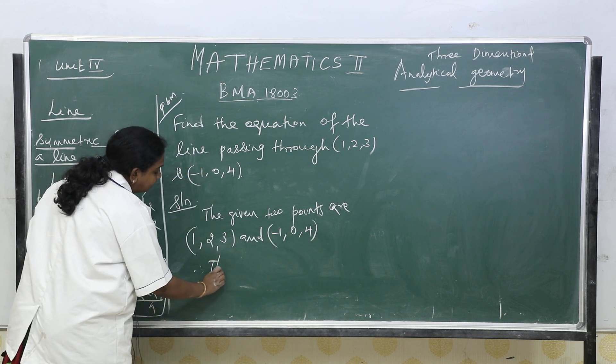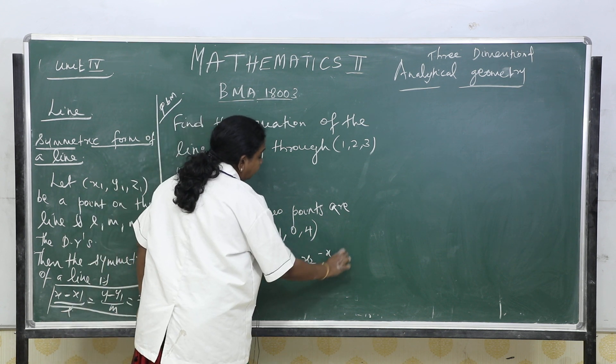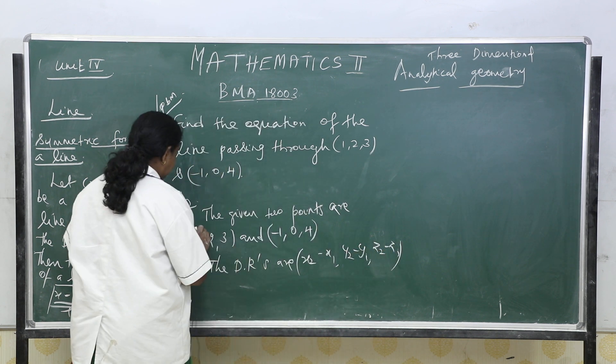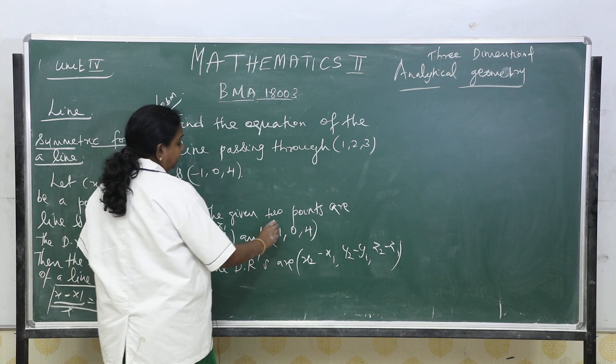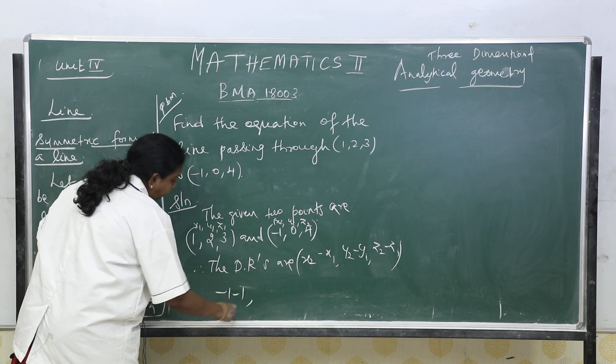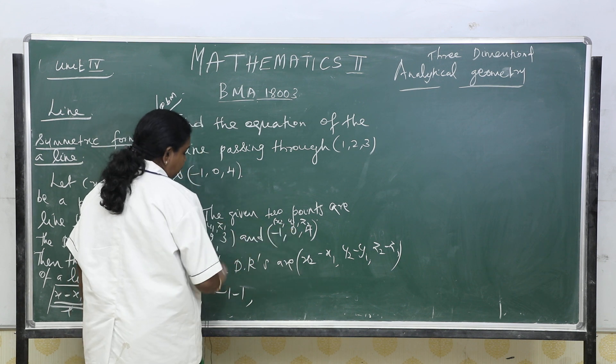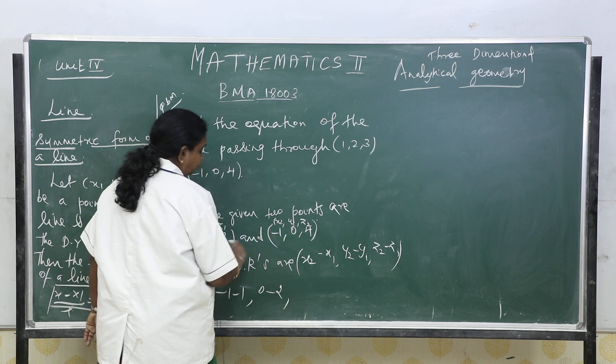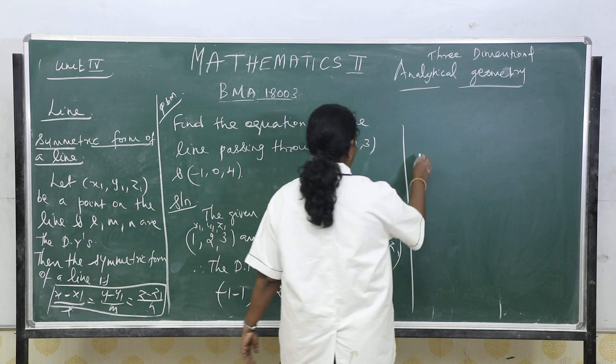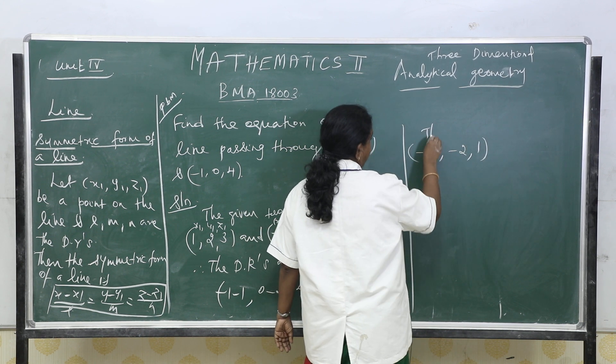Therefore, as we studied already, the direction ratios are x2 minus x1, y2 minus y1, z2 minus z1. Let us take this as x1, y1, z1 and this as x2, y2, z2. Therefore, x2 minus x1 is -1 minus 1, 0 minus 2 for y2 minus y1. Here y1 is 2 and y2 is 0, therefore 0 minus 2, and 4 minus 3. That is -2, -2, and plus 1. Therefore, the direction ratios are -2, -2, 1.